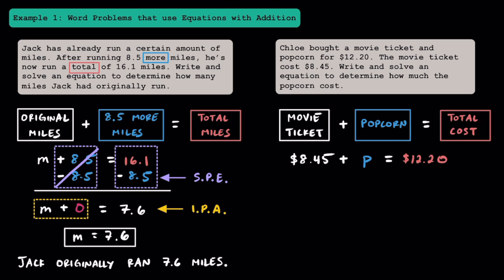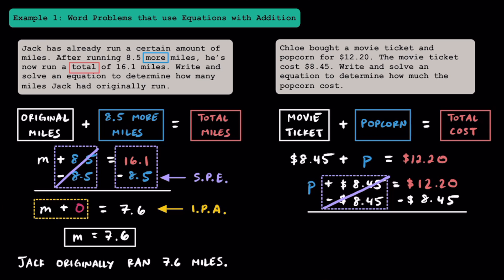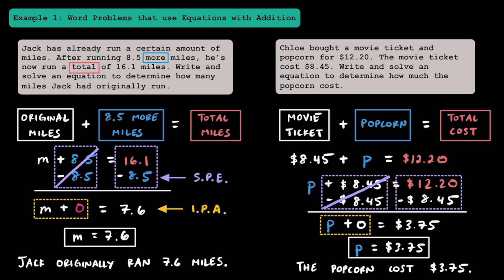If you're not used to seeing the constant term before the variable term, feel free to switch them — since we're adding, we can use the commutative property. We can write P plus $8.45 is equal to $12.20, where P represents the cost of the popcorn. Using the subtraction property of equality, I'm going to subtract $8.45 from both sides. On the left, we created opposites which combine to make zero, so on the left we have P plus zero, and on the right, $12.20 minus $8.45 equals $3.75. Using the identity property of addition, P is equal to $3.75 — the popcorn costs $3.75.